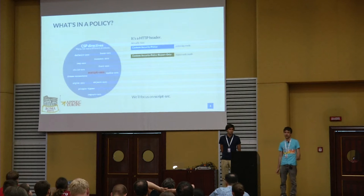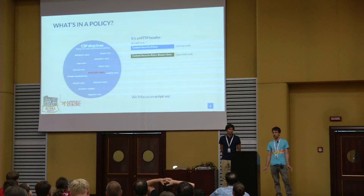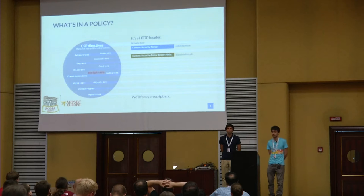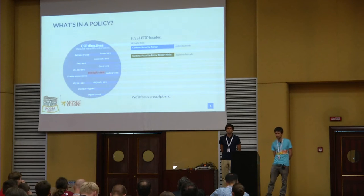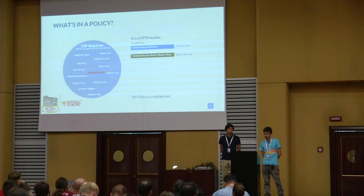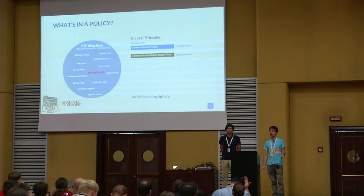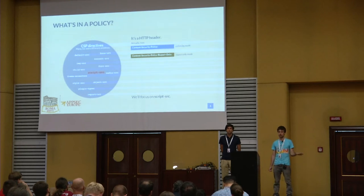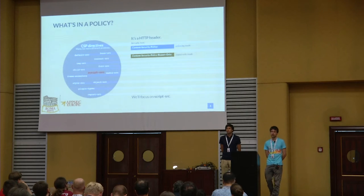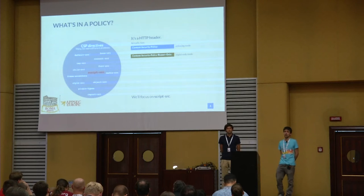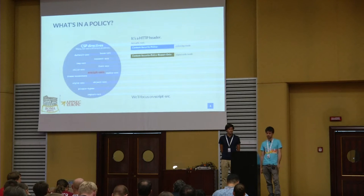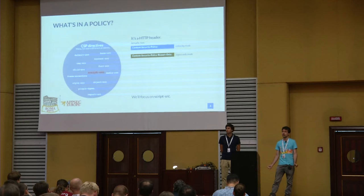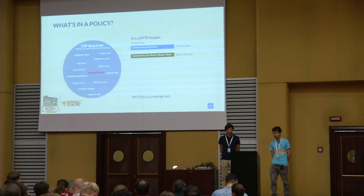CSP has a lot of directives, and each directive aims to control a different resource type. For example, img-src governs images, font-src governs fonts, child-src governs frames and nested browsing contexts including workers. With frame-ancestors you can specify which origins may frame your application. With plugin-types you can allow specific plugin MIME types — for example allowing Flash but not Java. We'll focus on script-src, because we want to talk about CSP as a mitigation against cross-site scripting vulnerabilities, which are still the number one vulnerability on the web.